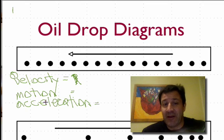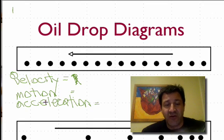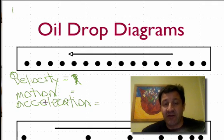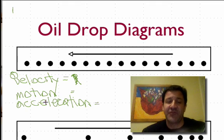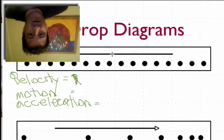There aren't really that many options because we're talking about motion in a straight line — one dimension. You can either have constant velocity, or you can be speeding up or slowing down. Let's look at the first diagram.